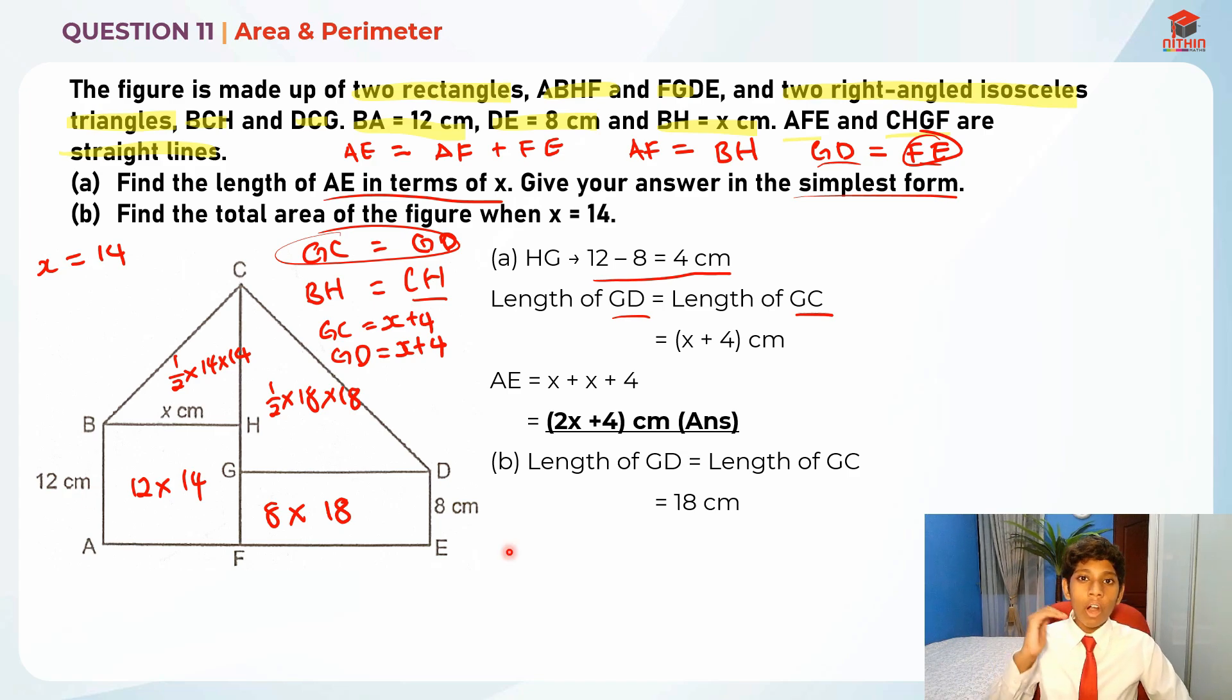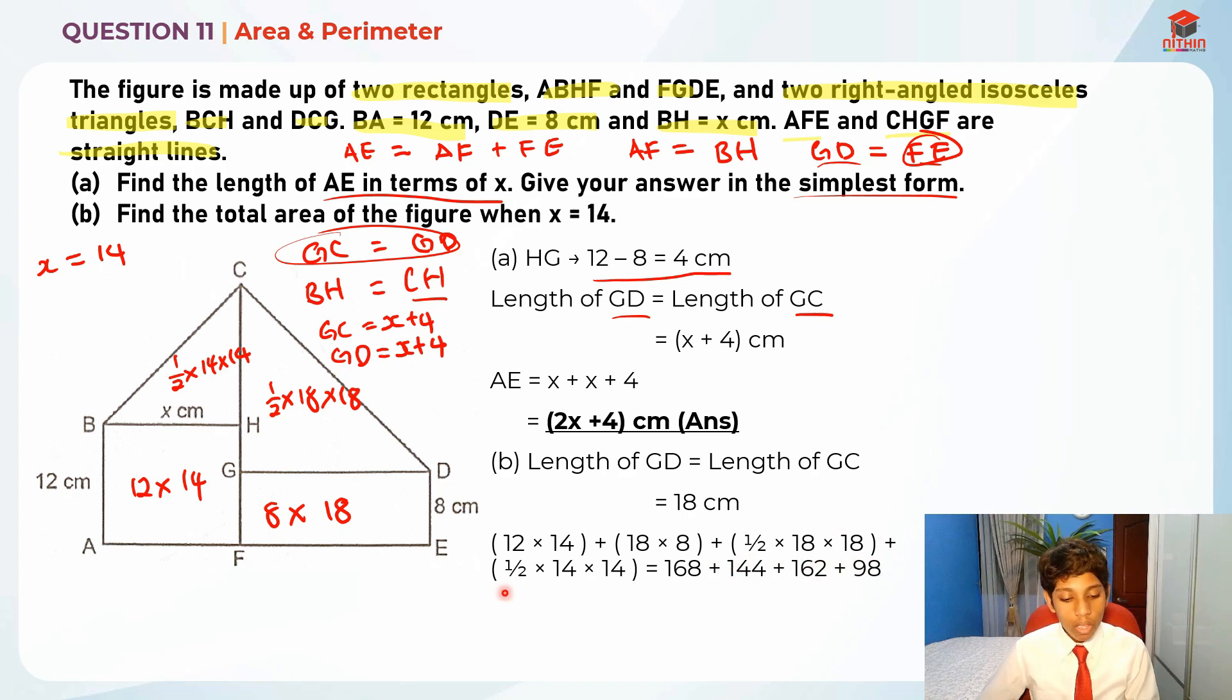You understand this part, right? But when you're calculating, you should be extra careful because at this point many students make many careless mistakes and lose easy marks. Let's do this together. First, 12 times 14 plus 18 times 8 plus half times 18 times 18 plus half times 14 times 14, which gives us 168 plus 144 plus 162 plus 98. Just punch these values into your calculator and you'll get 572 cm squared.